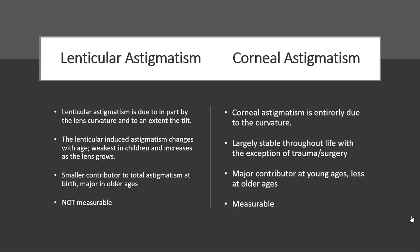Let's look at these two sources of astigmatism. There's lenticular astigmatism, which is due in part to the lens curvature and to an extent the tilt of the lens. The lenticular-induced astigmatism changes with age. It's weakest in children and increases as the lens grows, and it grows more against the rule over the course of your lifetime.